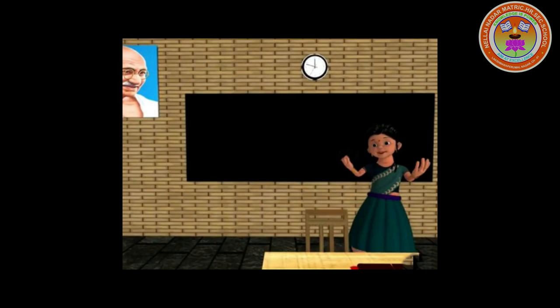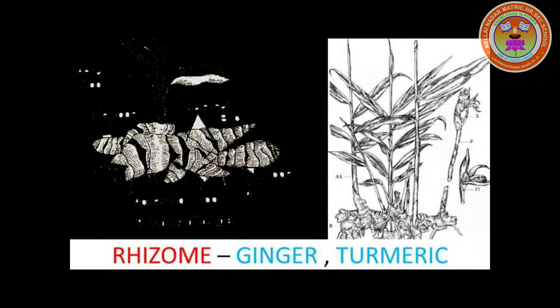There are four types of Underground Stem: Rhizome, Corm, Tuber, and Bulb. First, we are going to deal about Rhizome. It is an underground thick stem with nodes and internodes with scale leaves at the node. It grows horizontally and has an irregular shape. Rhizome have buds which give rise to new stems and leaves. Example: Ginger, Turmeric.